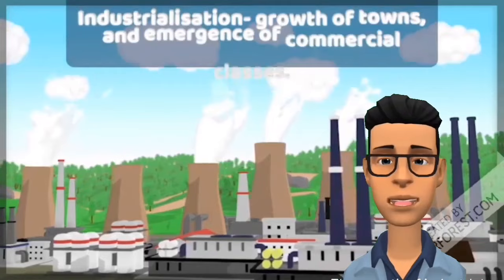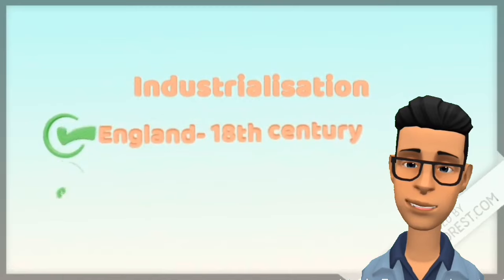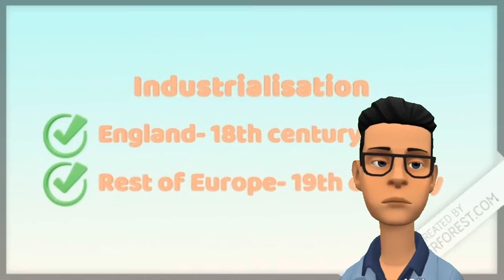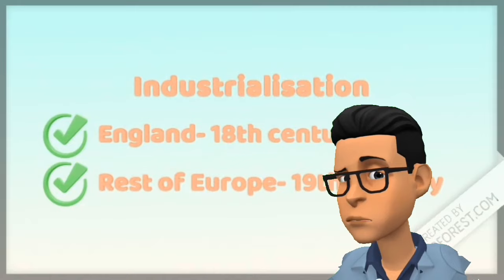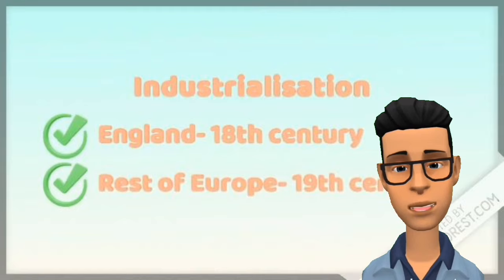The growth of industrial production and trade meant the growth of towns and the emergence of commercial classes. Industrialization began in England in the 18th century, while in France and parts of the German states, industrialization came only in the 19th century. Due to industrialization, new social groups came into being — a working class and middle classes made up of industrialists, businessmen, and professionals. In the east, these groups were smaller in number. The idea of national unity gained popularity in the educated, liberal middle classes.